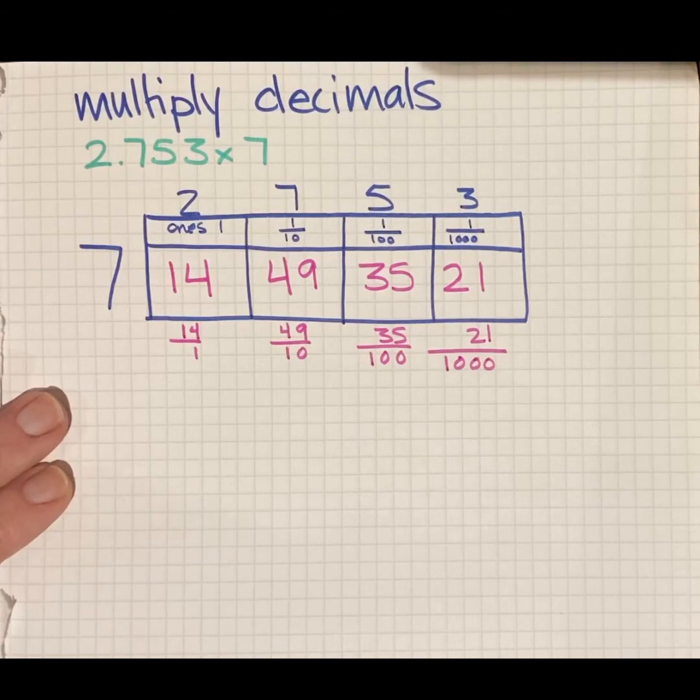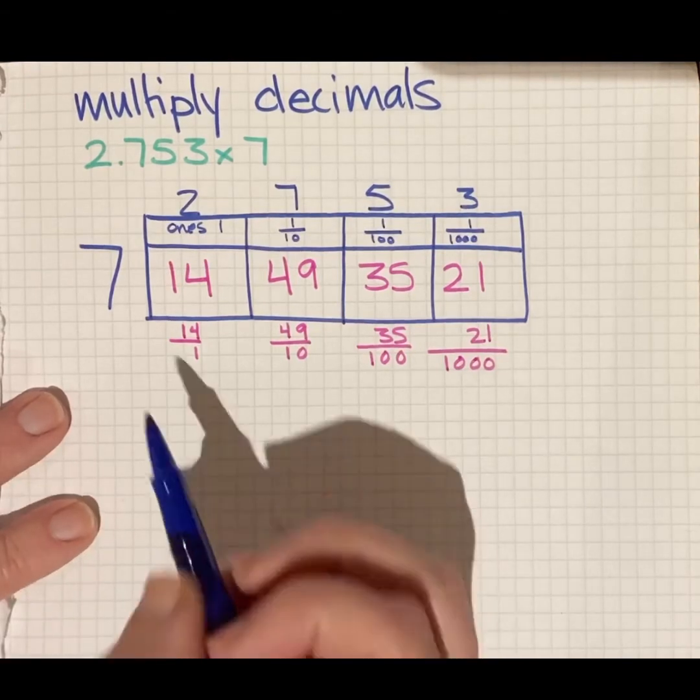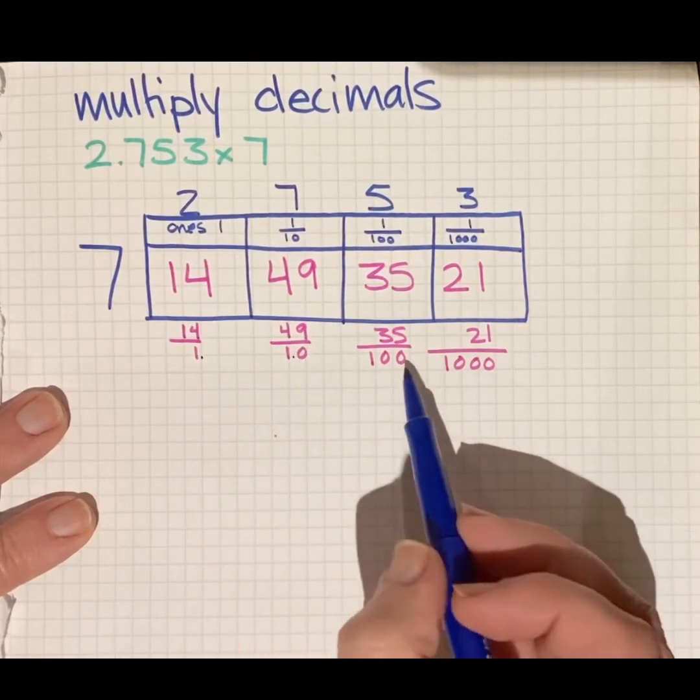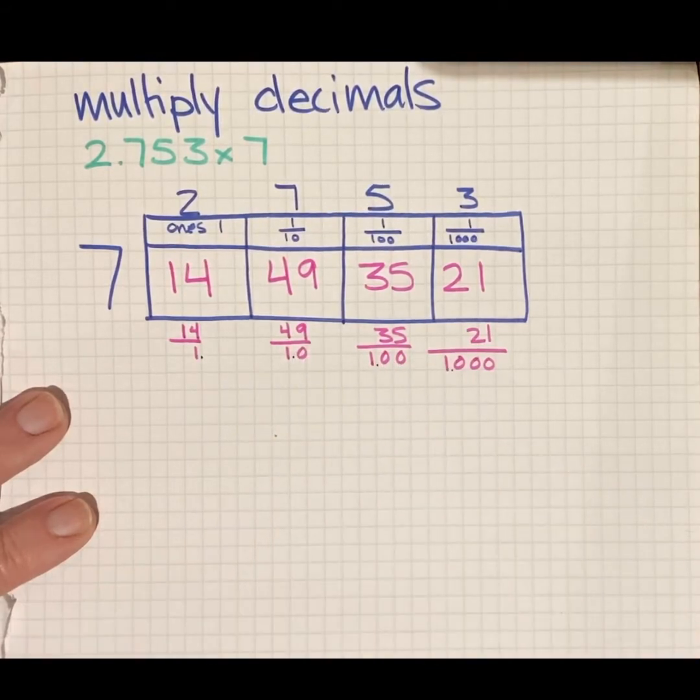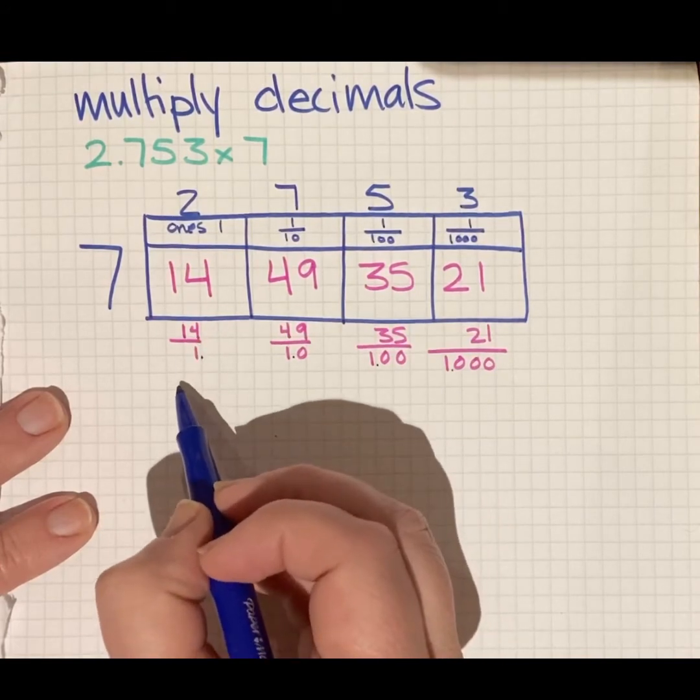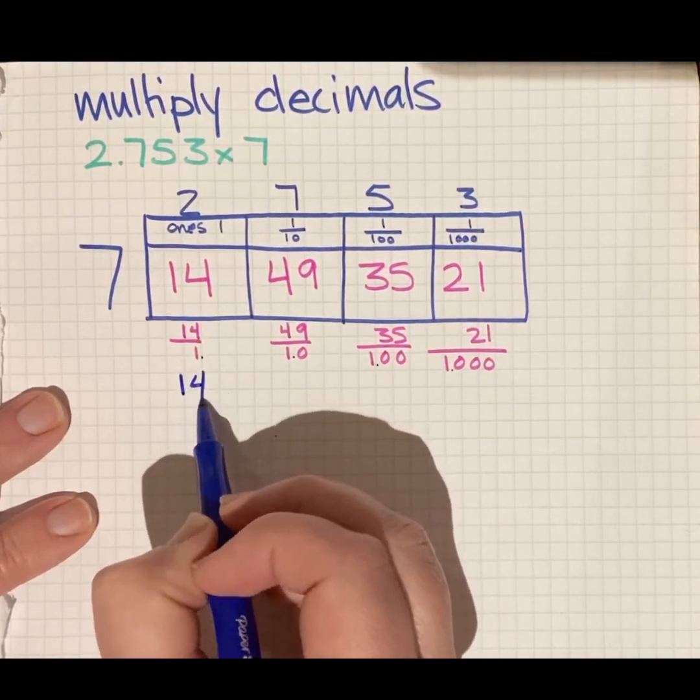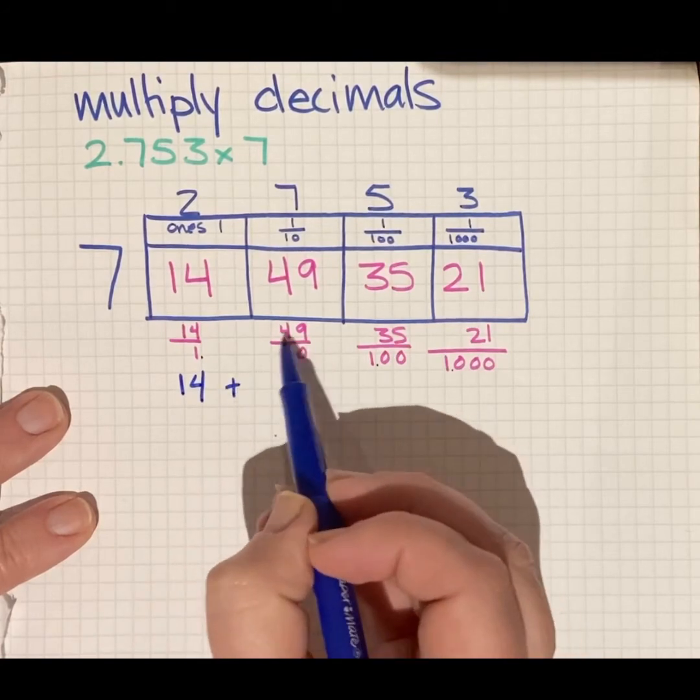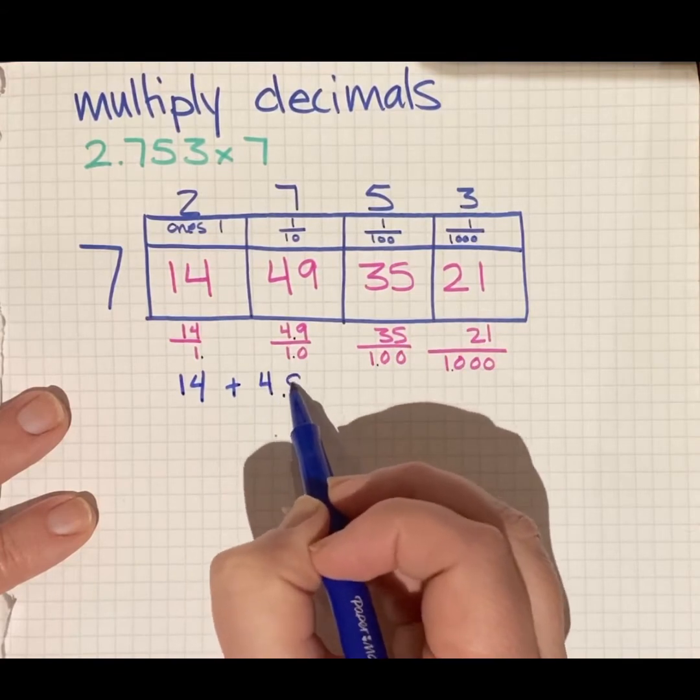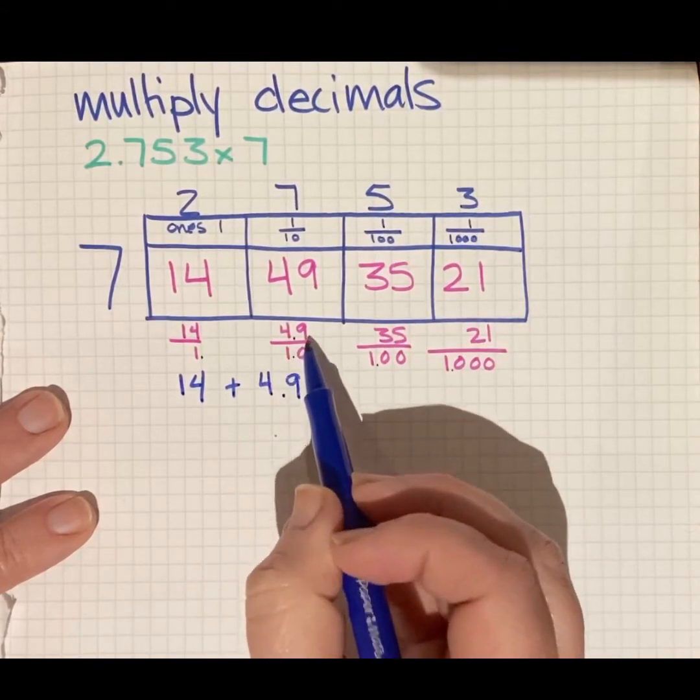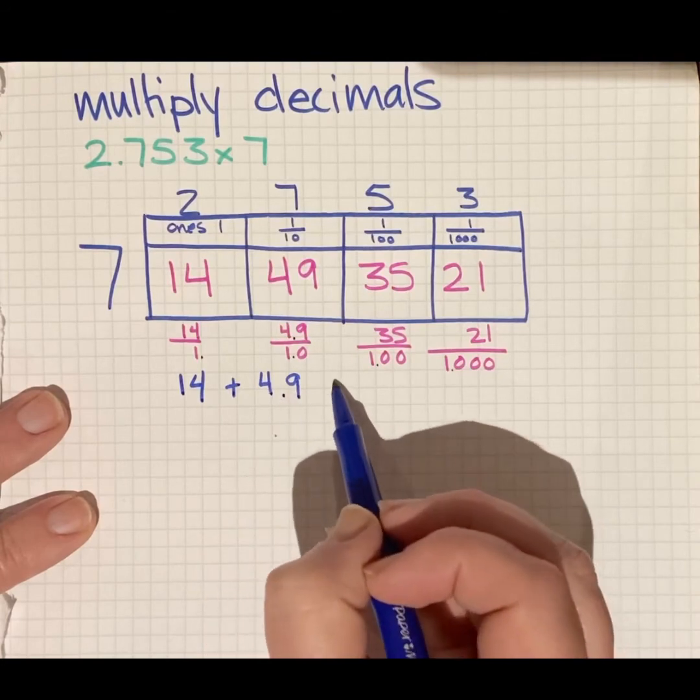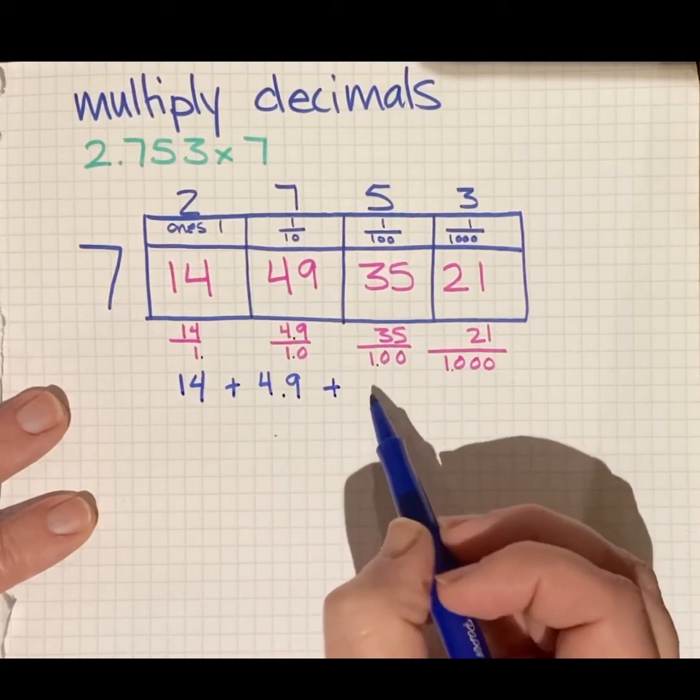Now I'm going to add those numbers together. I know one of the reasons I did this lining up is with one. There's my decimal. There's my decimal. There's my decimal. There would be my decimal. So I have 14 ones. So 14 in front of my decimal. Plus 4.9. That means my decimal is going to be here. I have four ones and nine tenths. 49 tenths is 4.9. Four ones and nine tenths. Plus 35 hundredths.